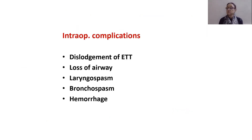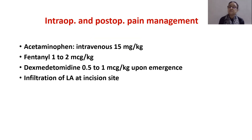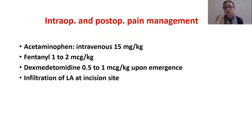Intraoperative complications include dislodgement of the endotracheal tube with loss of airway, laryngospasm, bronchospasm, and massive hemorrhage. Pain management is with multimodal analgesia: acetaminophen, fentanyl, infiltration of local anesthesia at the incision site. Dexmedetomidine may be given upon emergence for small swellings, but caution is needed as it may produce sedation, which is undesirable in airway surgery.